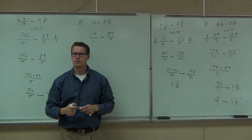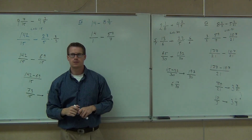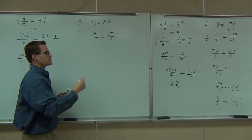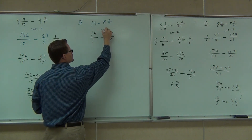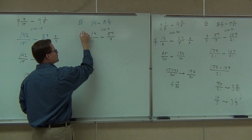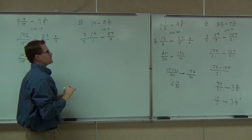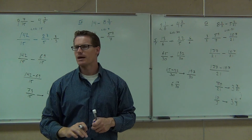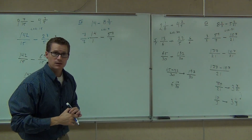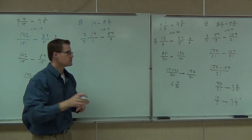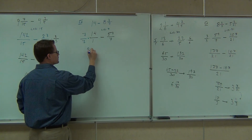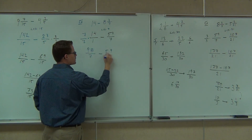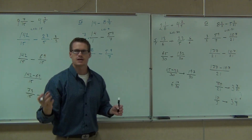You tell me what now. LCD. What's the LCD? 7. I know that. 7 over 7 times 14 over 1 — what are we going to have? 98. 98 over 7, minus 59 over 7. Hey, we've got the LCD. That's perfect.